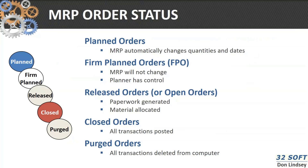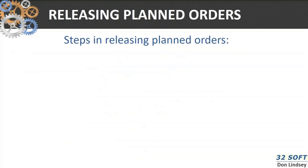MRP order statuses tell MRP what the current circumstance is around that particular order. We have planned orders, firm planned orders, which are used in the master production schedule, released orders, closed and purged orders.